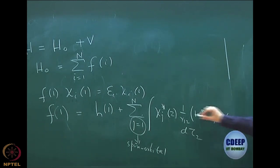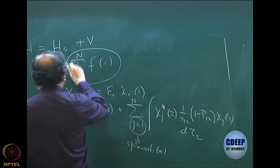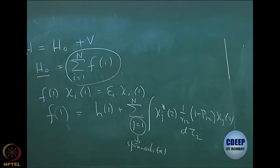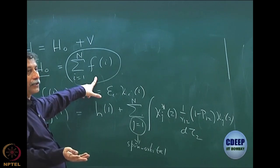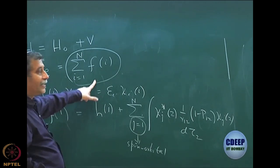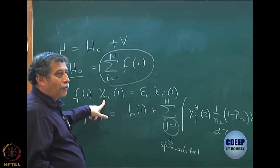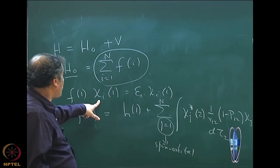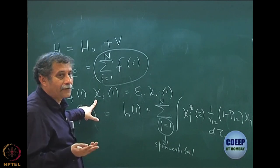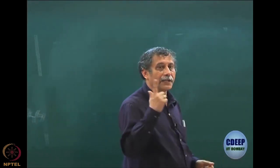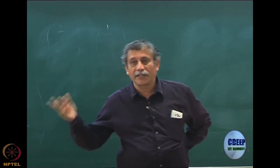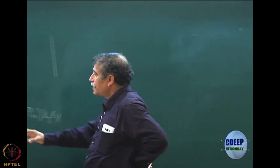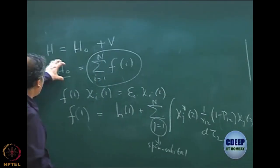So I define the single-particle Fock operator. Summing over all n electron coordinates gives me my n-particle operator. H₀ is an n-particle operator, whereas f(1) or any f(i) is a one-particle operator. This is now a non-interacting problem because H₀ is a sum of one-electron operators. Because it is non-interacting, its eigenfunctions are antisymmetric products of the eigenfunctions of f — which are spin orbitals because f is a one-particle operator.